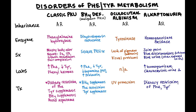Because dopamine is also known as prolactin inhibitory factor, low dopamine means low prolactin inhibitory factor, which leads to high prolactin. So if you have a patient with typical PKU symptoms but high prolactin, you need to pick tetrahydrobiopterin reductase deficiency rather than phenylalanine hydroxylase deficiency, because classic PKU does not cause low dopamine and high prolactin.